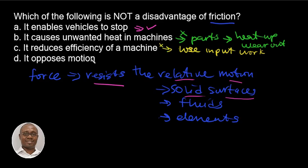Option D: it opposes motion. As we find out, friction opposes any relative motion between objects acting as the surfaces in contact. So this also is a disadvantage.